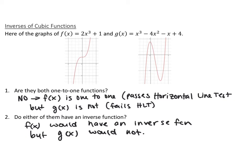f(x) is 1-to-1: any horizontal line drawn on its graph passes the horizontal line test, meaning every y-value has its own x-value. But g(x) is not 1-to-1 — it fails the horizontal line test because many y-coordinates have multiple x-coordinates. So f(x) would have an inverse function, but g(x) would not. Unlike linear functions, where almost all have inverses, and unlike quadratics, where none do, cubic functions depend on the shape of the graph — whether there are turning points or not.